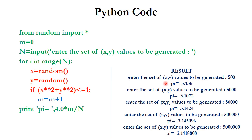For the first run with N = 500, the result is 3.136. With N = 5000, the result is 3.1072. With N = 50,000, the accuracy improves further. As the number of points increases, the accuracy also increases.